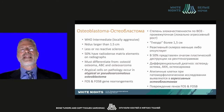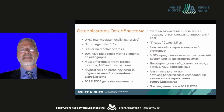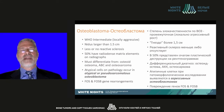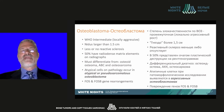There is less or no reactive sclerosis compared to osteoid osteoma. 50% have a radiodense matrix elements on radiographs, and it should be differentiated from osteoid osteoma, aneurysmal bone cyst, and osteosarcoma. Atypical cells on pathology occur in atypical or pseudosarcomatous osteoblastoma, and the genetic markers used are FOS and FOSB gene rearrangements.